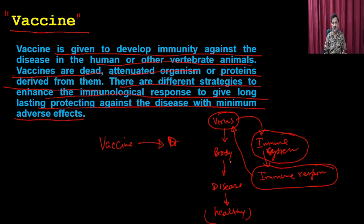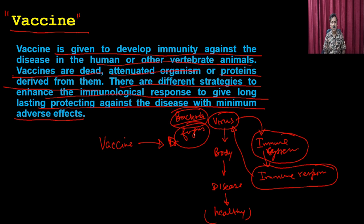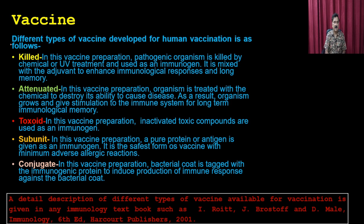This principle applies not only to viruses but to bacteria, fungi, or any infectious organism — the body produces an immune response and remembers it, so when the same organism enters again it triggers an immune response and provides protection. Different types of vaccines include killed vaccines, attenuated vaccines, toxoids, subunit vaccines, and conjugated vaccines.